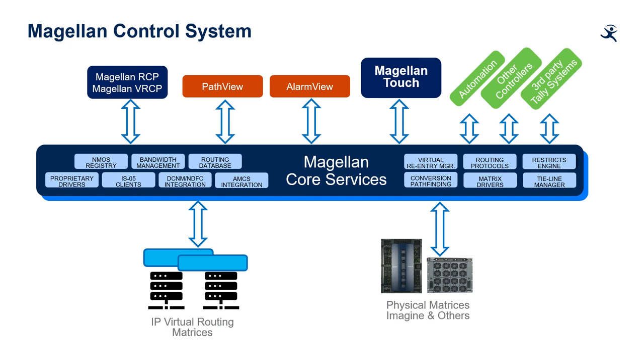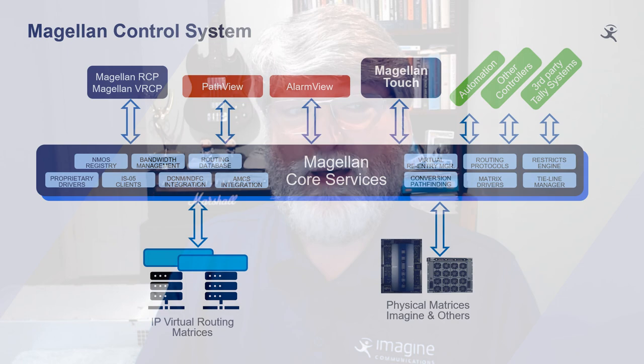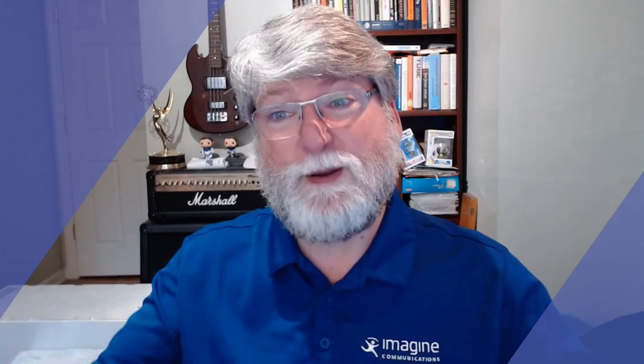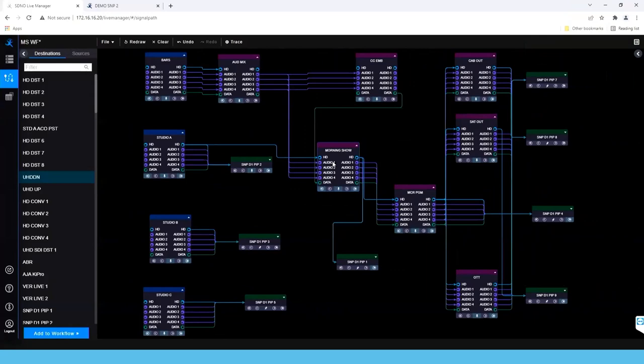The other things the control system does is to keep track of how all those signals relate to each other — which audios go with which videos, for example. This is a big part of configuring a system. Then there's the whole path view and alarm view kind of angles. One of the things we've focused on in Magellan is having displays that enable operators to see what's really happening in the system. In SDI, you could have a wire diagram and actually look at the signal flow on a piece of paper.